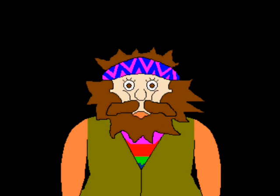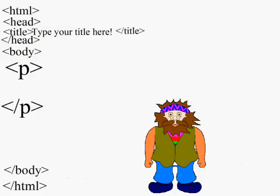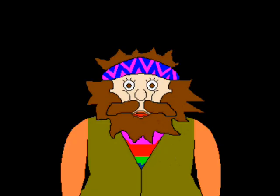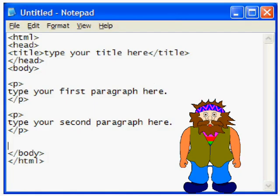And now you are going to add the content to your page. For demonstration purposes, I will make two simple paragraphs. First you make opening and closing tags with the letter P in between them. Then you type your first paragraph in between those two tags. In order to make the second paragraph, all you do is type in the opening and closing P tags and type your second paragraph in between them. So your Notepad should look something like this.